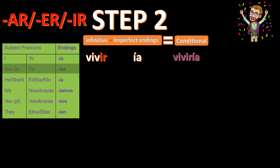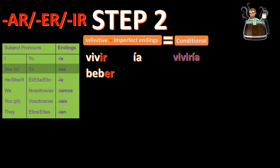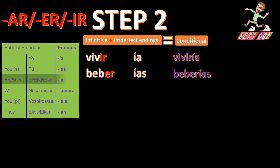Tú, and the ending -ías, with the verb beber, is going to be beberías. Let's take él/ella for the next one, and the ending -ía again. And ir, which is normally irregular, goes to iría.